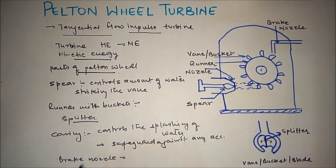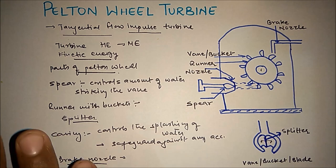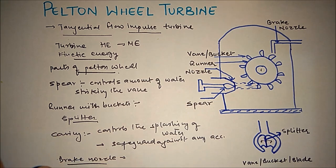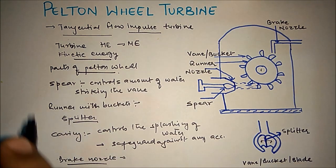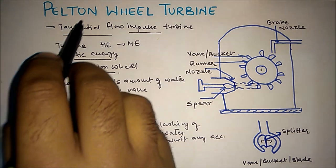So this is all about the construction and working of Pelton wheel turbine. Pelton wheel turbine is a tangential flow impulse turbine — tangential flow because the water strikes the runner tangentially, and impulse turbine because the inlet hydraulic energy is in the form of kinetic energy.